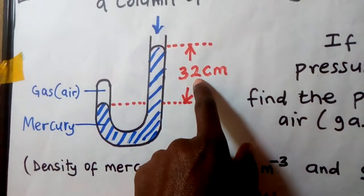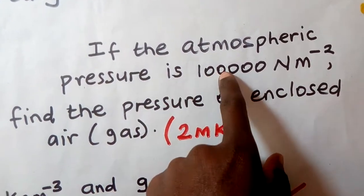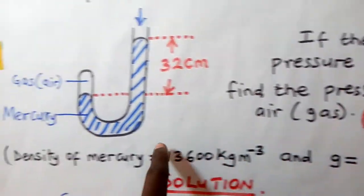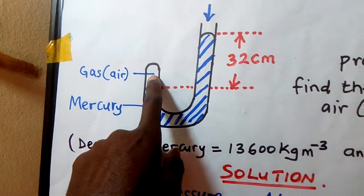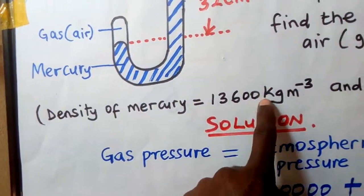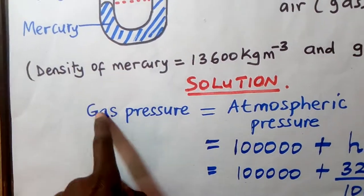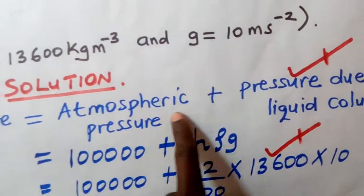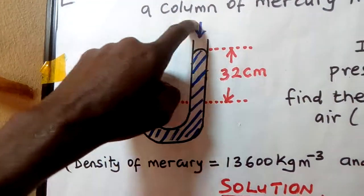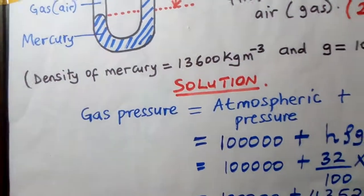This height difference is also called the excess pressure. If the atmospheric pressure is 100,000 newtons per meter squared, we need to find the pressure of the enclosed air. The pressure of a gas is given by atmospheric pressure plus the pressure due to the liquid column. The side open to atmospheric pressure means atmospheric pressure plus the pressure of the liquid column gives you the pressure of the gas.